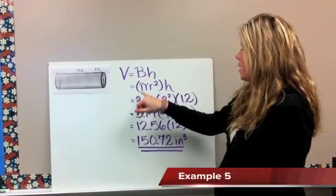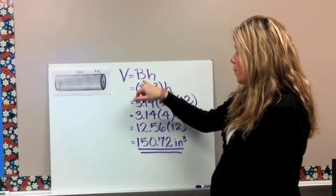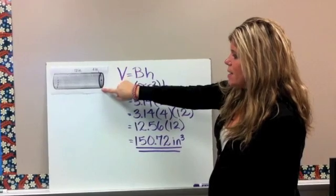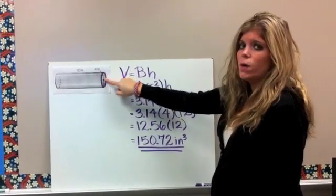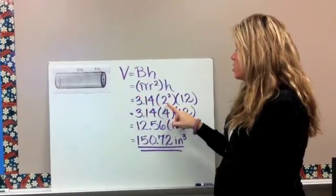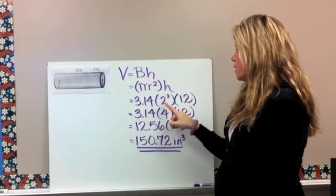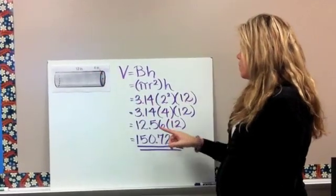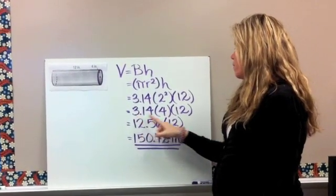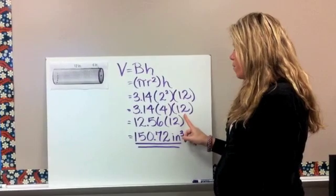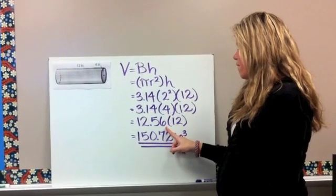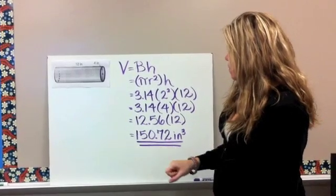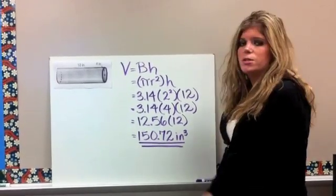You should have gone ahead and plugged in your numbers here. You should have used the same formula, so pi r squared for the base. You'll notice here this base gave you the diameter, so the diameter was 4, so we know that the radius has to be 2. So 3.14 times 2 squared times the height of the cylinder, which is 12. Then we simplify to 3.14 times 4 times 12, which gave us 12.56 times 12, and our final answer for volume of the cylinder is 152.72 inches cubed.